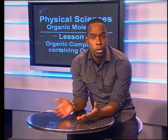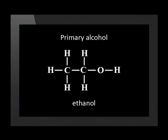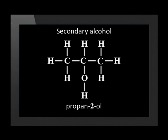We have seen that the OH group can be joined to the carbon chain in many ways. Three different types of alcohols can be identified depending on how the carbon attached to the hydroxyl group bonds to other carbon atoms. In some alcohols, the carbon attached to the OH group is attached only to one other carbon atom — these are called primary alcohols. Examples are methanol, ethanol found in alcoholic beverages, and propane-1-ol. In the second type, the carbon attached to the OH group is attached to two other carbon atoms. Examples are butane-2-ol and propane-2-ol — these are called secondary alcohols.